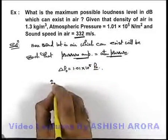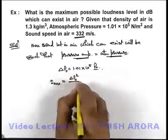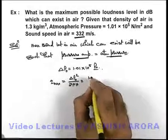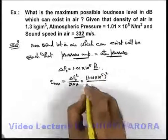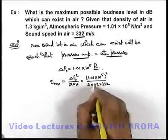Correspondingly we can find out the maximum sound intensity which can be given as delta p not square by 2 rho v. If we substitute the values, it is 1.01 into 10 to power 5 whole square divided by 2 into 1.3 into 332 meters per second.